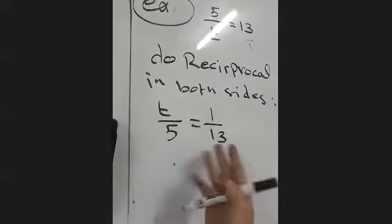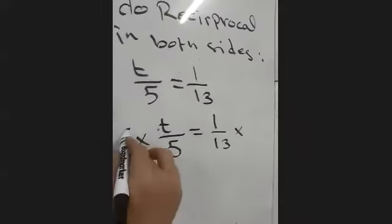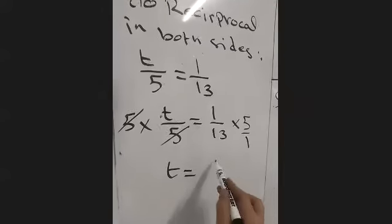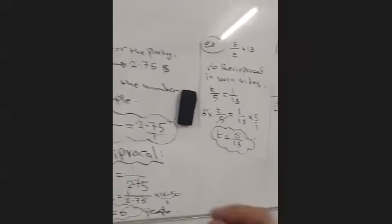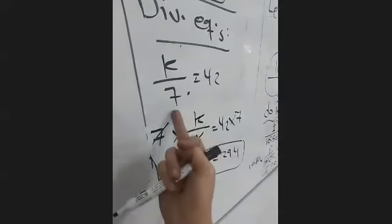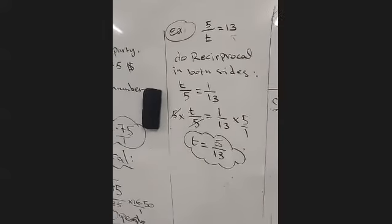Now we have a normal division equation: T over 5 equals 1 over 13. Multiply both sides by 5. The 5s cancel, giving T equals 5 over 13. If the variable is down, do reciprocal first. If the variable is up, multiply normally and continue the solution. If you want to copy this extra example, please do so.